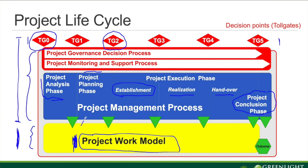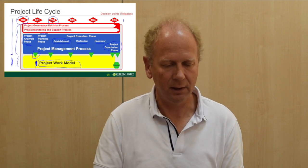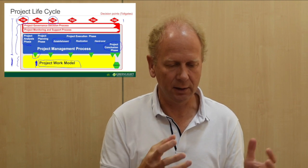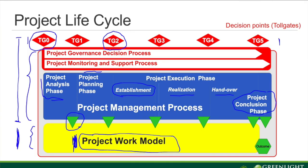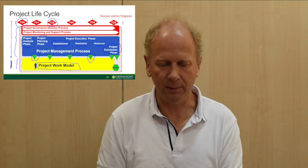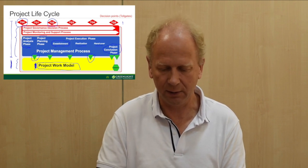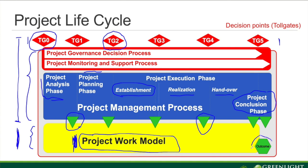We can see the close connection between the blue part and the yellow part — we have milestones, represented by these green triangles. To go from one phase to another we need to have completed something — for example, an analysis report when completing the project analysis phase. When we start to deliver, it could be many deliveries. Most projects nowadays deliver more than once, so we could have several delivery milestones, and we need to fulfill a number of internal requirements to ensure the delivery is good enough.